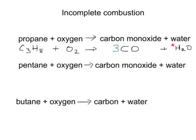Similarly, we have eight hydrogens on the left and only two on the right, so we need to put a four in front of the H2O to show eight hydrogens. When we count the oxygens on the right-hand side, there are three single oxygens from the 3CO and four single oxygens from the 4H2O, making a total of seven. That means we need three and a half oxygen molecules on the left-hand side. Although you cannot strictly have half an oxygen molecule, it is accepted by the exam board. Alternatively, we could double everything: two propanes, seven oxygen molecules, six carbon monoxides, and eight water molecules.